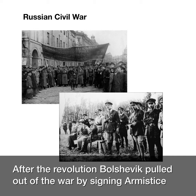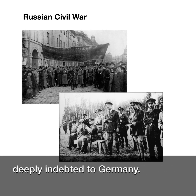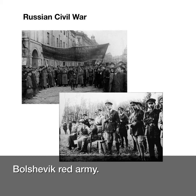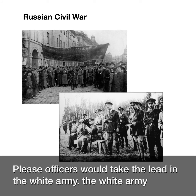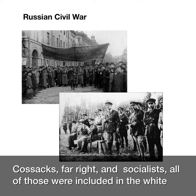After the revolution, the Bolsheviks pulled out of the war by signing an armistice with Germany — exactly what people wanted. But the army officers who were loyal to the Tsar decided to fight against the Bolshevik Red Army. These officers took the lead in the White Army, which consisted of many factions opposed to the Bolsheviks: Cossacks, far-right, socialists — all were included.